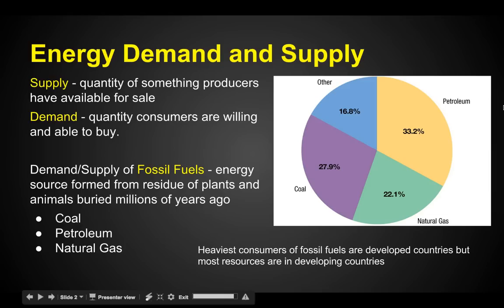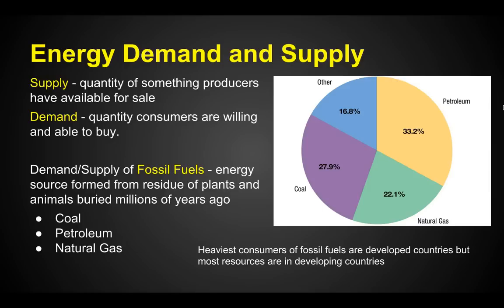Energy demand and supply. Supply is the quantity of something producers have available for sale, and demand is the quantity consumers are willing to buy. If you've got a huge supply of eggs but you don't have consumers wanting to buy it, then you've got a problem, because you can't sell back the money you put into your chickens and facilities. So we've got to have a good demand along with the supply.